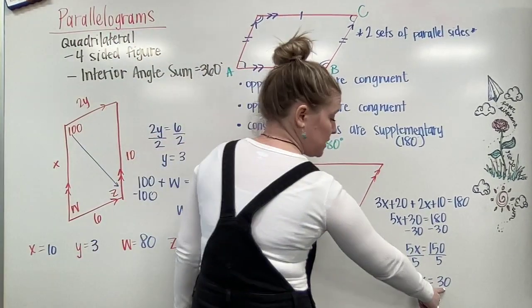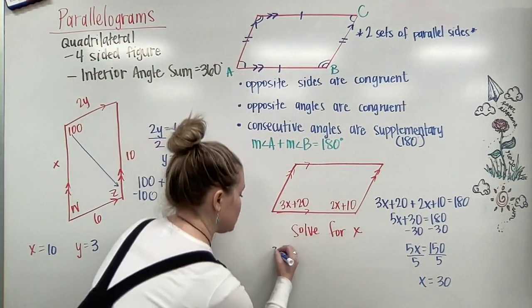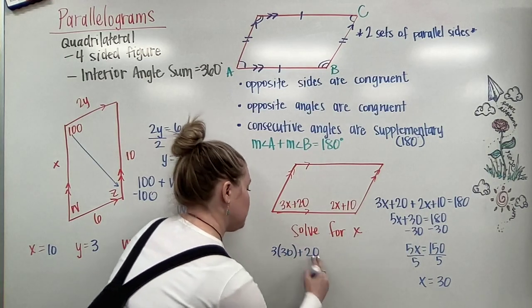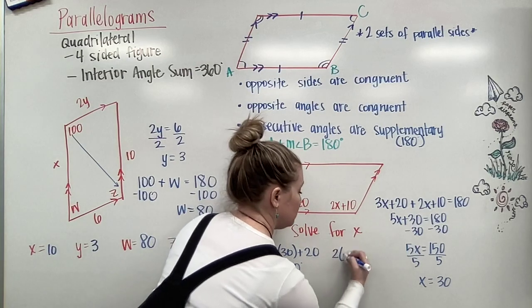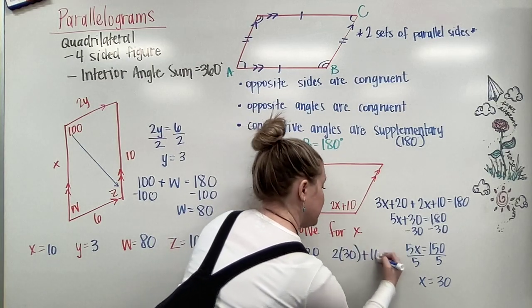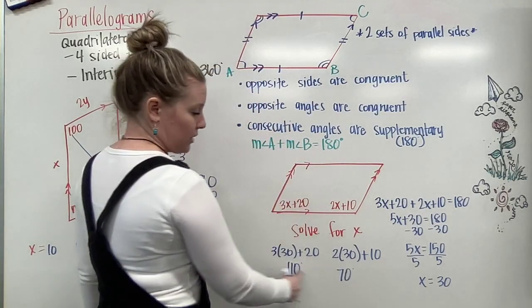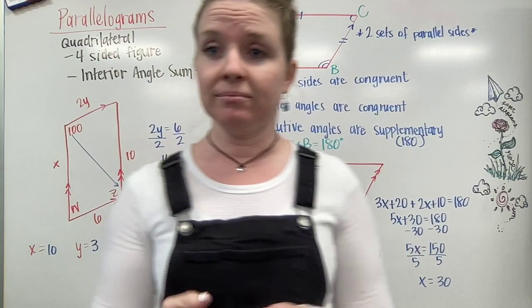And this is kind of cool because we can check. Plug in the 30. So that's 3 times 30 plus 20, so 90 plus 20, that's 110. So then 2 times 30 plus 10, that's 60 plus 10, that's 70. 110 plus 70, that's going to give me my 180.